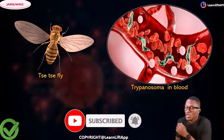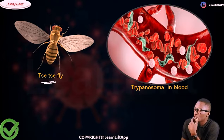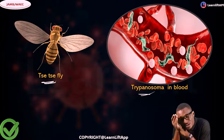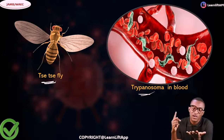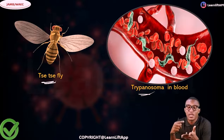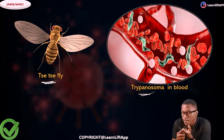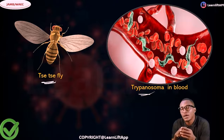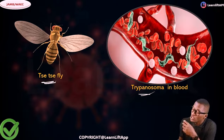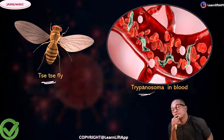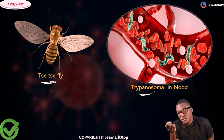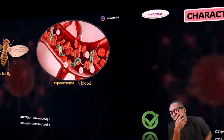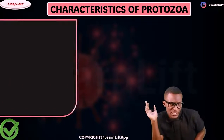The other one we talked about is Trypanosoma, which is carried by the tsetse fly. You can see Trypanosoma in blood as well. Trypanosoma causes sleeping sickness. The tsetse fly is the vector and man is the host.